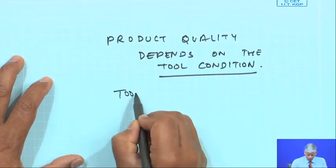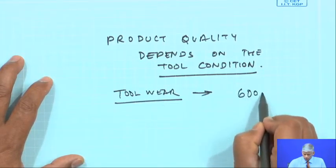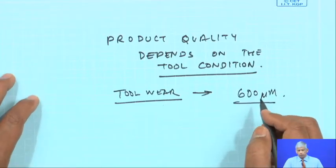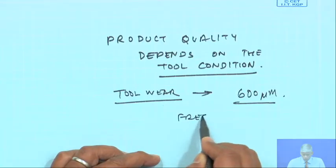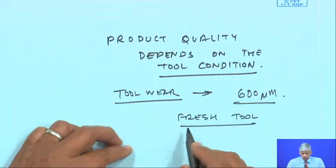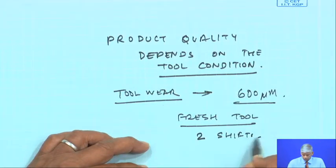The flank wear — the tool wear we will discuss — beyond 600 microns, your manufacturing specialist will say the tool is blunt and has to be replaced. In a large production plant doing machining operations day in and day out, how do you know it is time for the tool to be replaced? They usually go by the operator's experience — for the same operating conditions, a fresh tool is replaced after every two shifts.